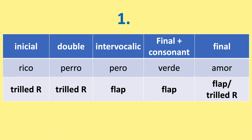The first R type is the one most people are familiar with — it's the trilled R in the initial position. The double R is also trilled. The intervocalic R is a flap, and the syllable-final plus consonant is also a flap, while the word-final can be either a flap or a trill. Sometimes the initial is also a flap. So basically: rico, perro, pero, verde, amor.